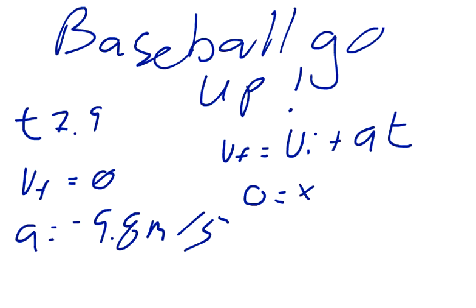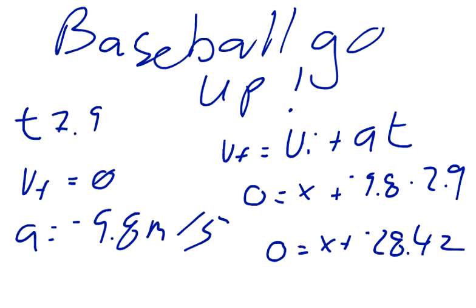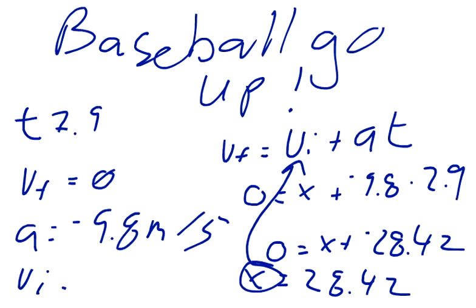Zero equals something plus negative 9.8 times 2.9. Negative 9.8 times 2.9 is negative 28.42. So zero equals something plus negative 28.42. Negative 28.42 added to both sides and x equals 28.42, where x represented our initial velocity. So our initial velocity is 28.42 meters per second.